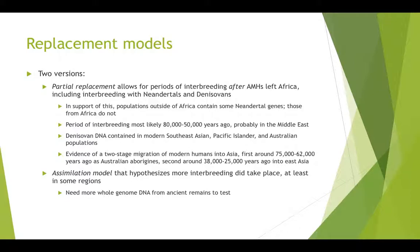The assimilation model hypothesizes that more interbreeding took place in at least some regions. A kind of partial replacement coupled with assimilation suggests that the modern human genome simply subsumed the genomes of pre-modern populations into our own species and subspecies designations. Through greater levels of interbreeding, those pre-modern populations were essentially absorbed. This could vary by location — there may have been more assimilation in areas where Neanderthals and Denisovans persisted far longer, for example in Eastern Asia.